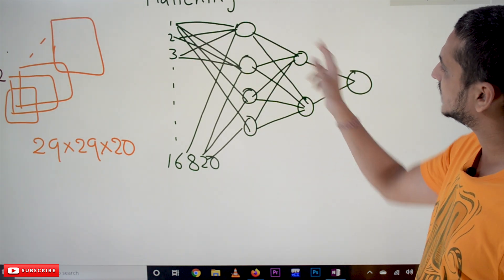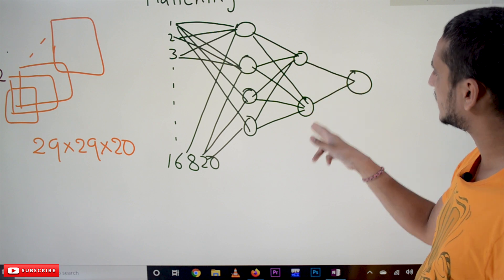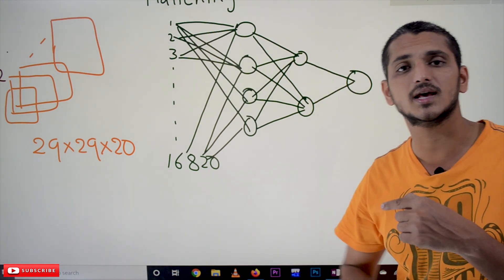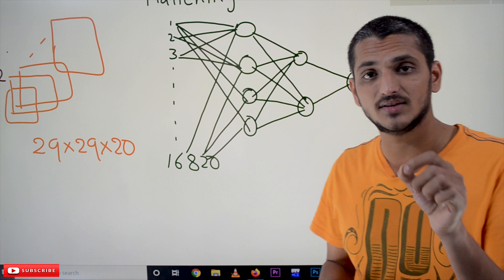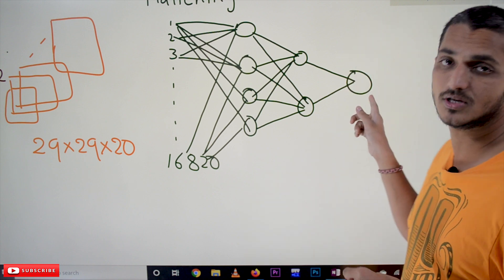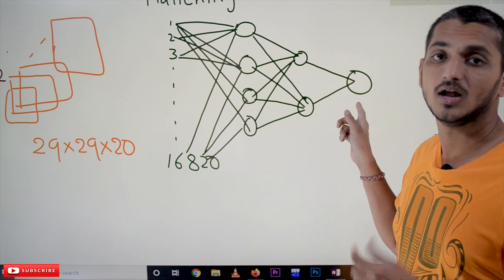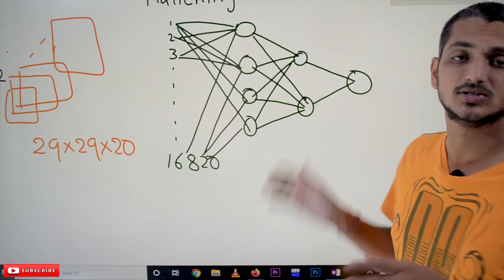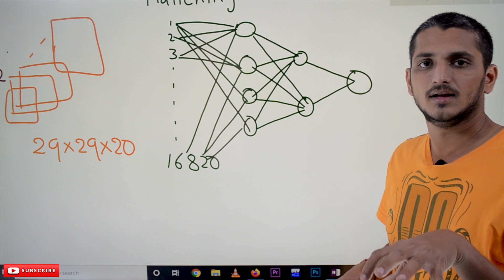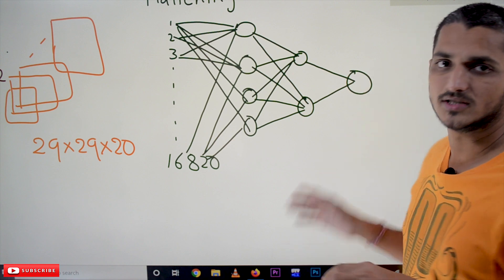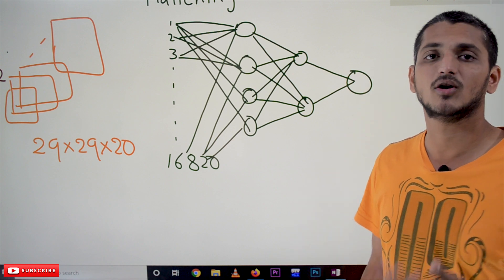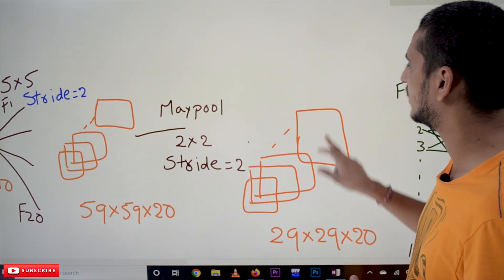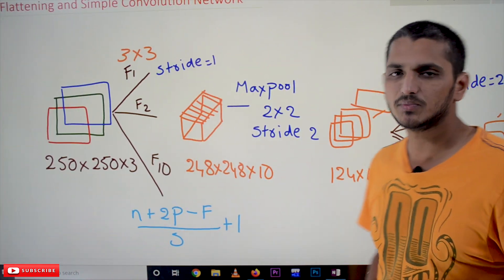From here we apply neurons in the next layers — this is the first hidden layer, second hidden layer, and this is the output layer. At the output layer, if it is binary classification we apply the cross-entropy loss function. If it is multi-class classification we apply the softmax loss function. That is how we apply our convolution neural network. This is the complete structure of a convolution neural network.